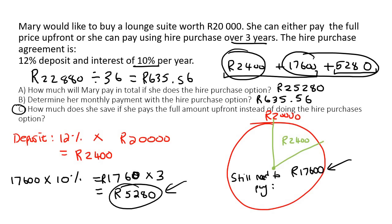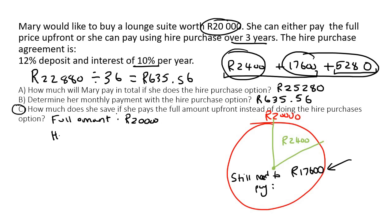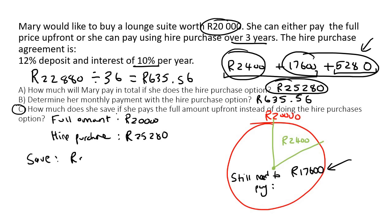Question C asks how much money does she save if she pays the full amount instead of doing hire purchase? If she just pays the full amount, then she pays 20,000 rand. But if she does the hire purchase, then she pays a total of 25,280 rand. The difference between those two numbers is the penalty amount, which was 5,280 rand. So how much will she save if she pays the 20,000? She'll save 5,280 rand.